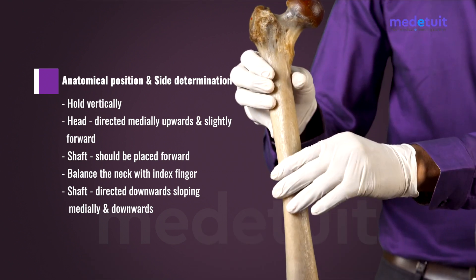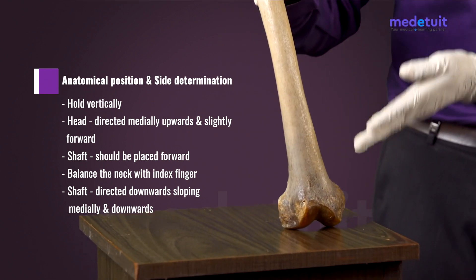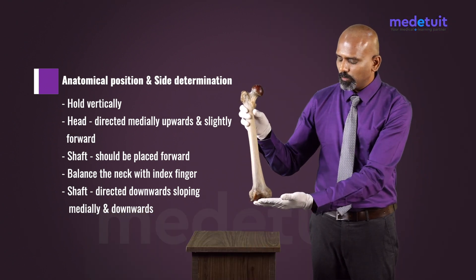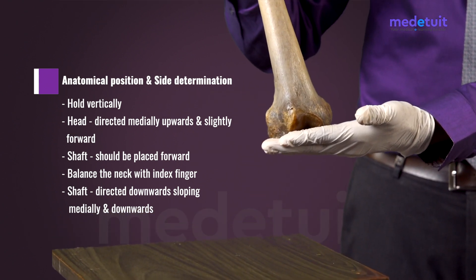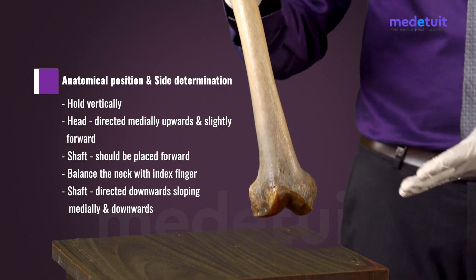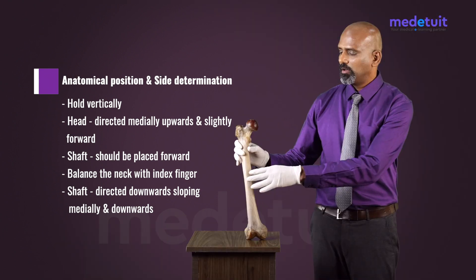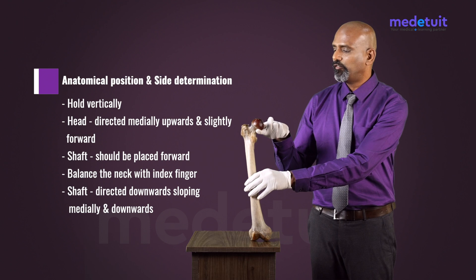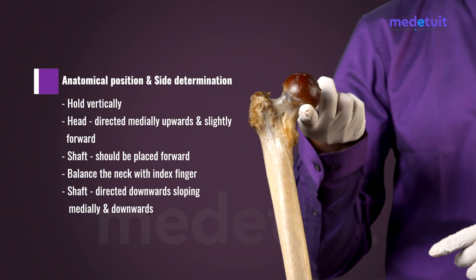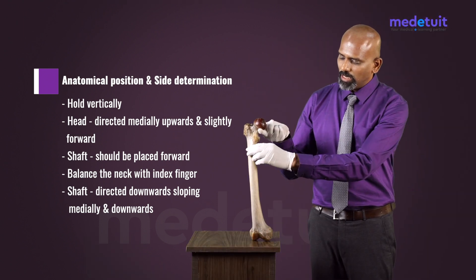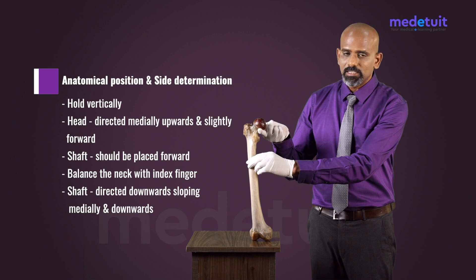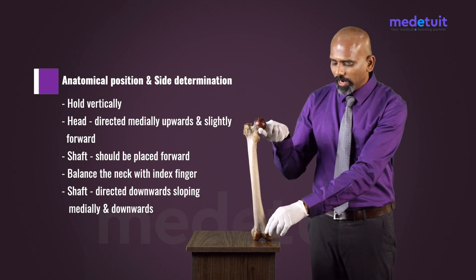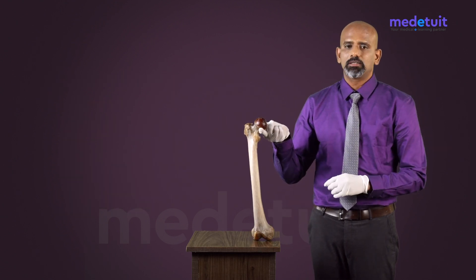Place the lower end of the femur on the table in such a way that both inferior surfaces of the condyles touch the table. Balance the neck of the femur with your index finger so that the shaft is directed downward, sloping medially and downward.